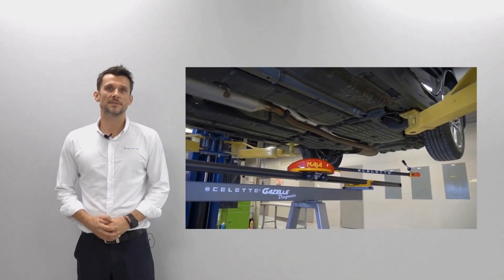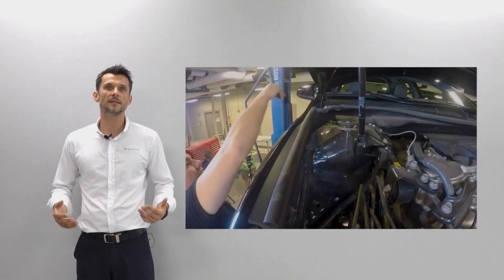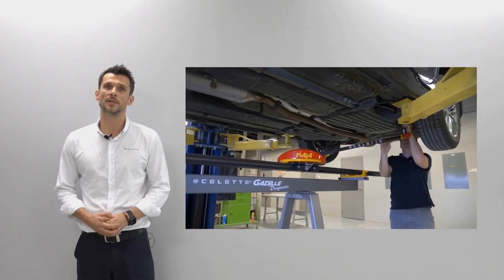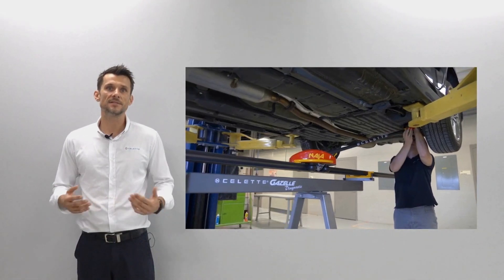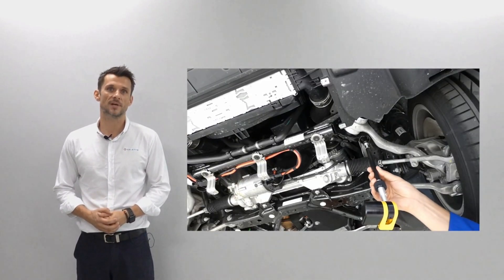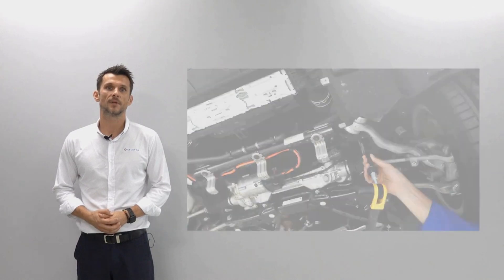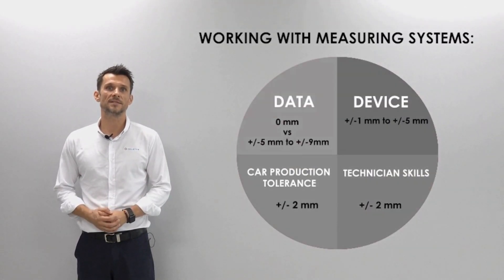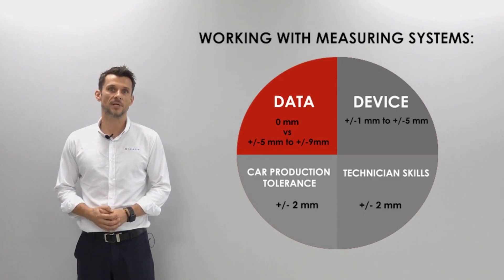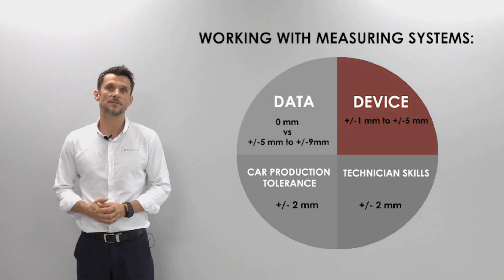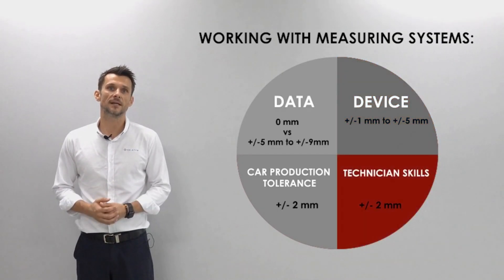Let's talk a little bit about the device itself. It is important to understand where the additional tolerance can come from. Imagine that the data we just spoke about was created with the tolerance of five to nine millimeters — this data is already in your measuring system and you trust it. So when you go to measure the car, you automatically add more tolerance without knowing it. On this diagram, in the first part we see that the data can be anywhere from zero up to nine millimeters. In the second quarter we have the tolerance of the device, which can be anywhere from one to five millimeters. In the third quarter we see again the skills of a technician, and it can be up to two millimeters.